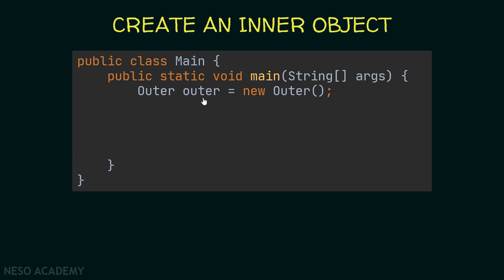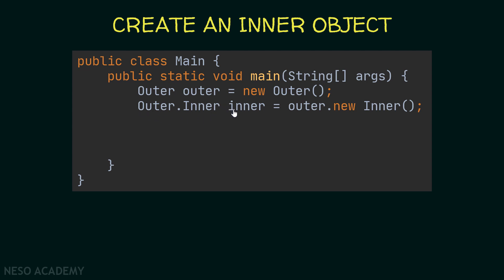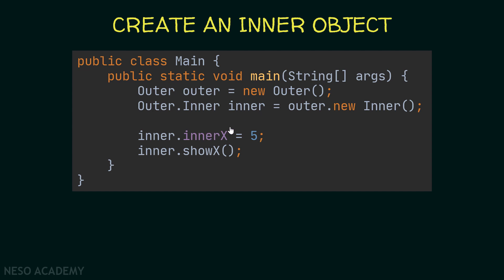We create an outer object, then declare a variable of type Outer.Inner called 'inner'. To instantiate it, we use the outer object with the dot operator and call the constructor of the inner class using the new keyword. After that, we can use this object normally — assigning innerX to 5 and calling showX. This will print outerX (0) and innerX (5).